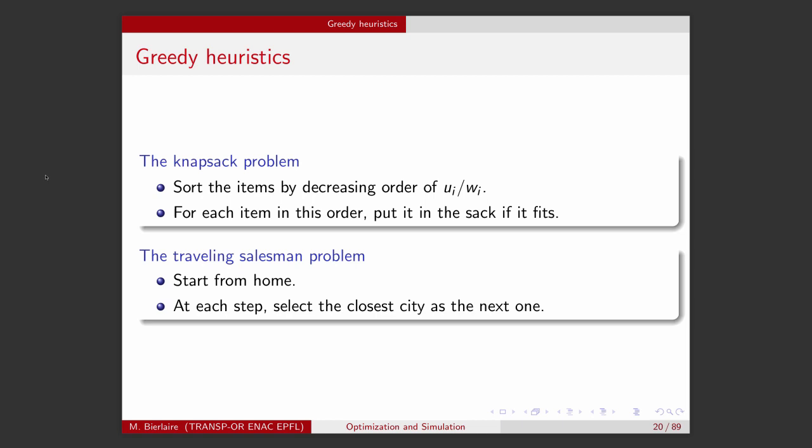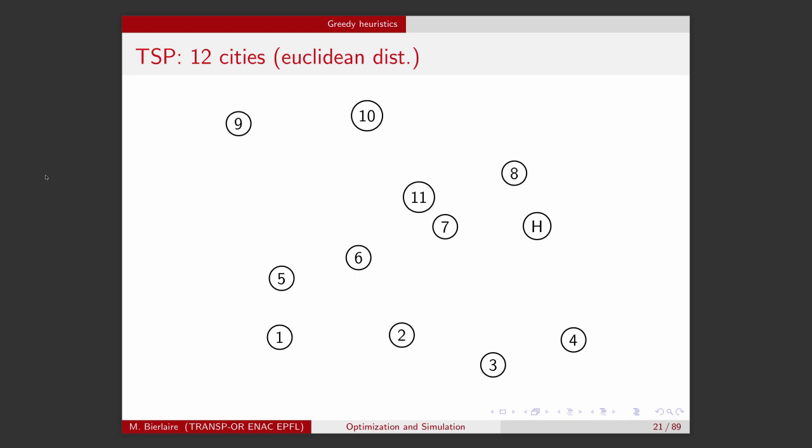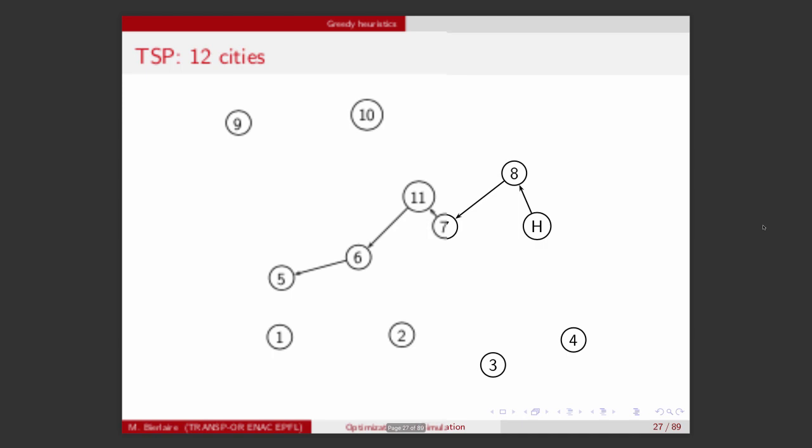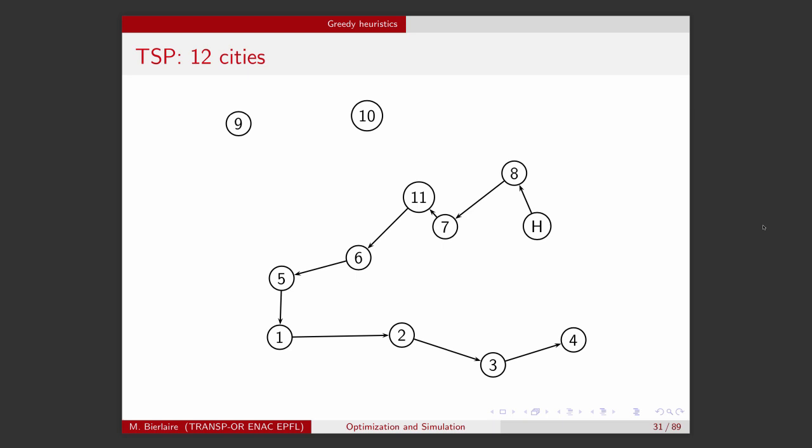Let's give an example. So home here is the node here. The closest city from home is city number eight. So we decide to go there. Then from eight, the closest city is city number seven. Then city number eleven, number six, number five, number one, number two, number three, number four. And there the closest city happens to be city number ten which is on the other side of this map here. Then we go to city number nine. And then we go back home.